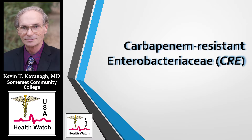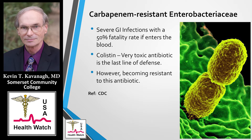Now let's talk about carbapenem-resistant Enterobacteriaceae, or CRE. This is the emerging organism with a 50% fatality rate, causing severe GI infections. Colistin is the last line of defense but is a very toxic antibiotic when given parenterally, and CRE is becoming resistant to it. One question raised at a presidential council meeting was: how did we see totally resistant CRE in livestock in Pennsylvania if colistin is not used in agriculture? My comment was that it's in everybody's medicine cabinet — the over-the-counter triple antibiotic ointment. That, I feel, is the problem.